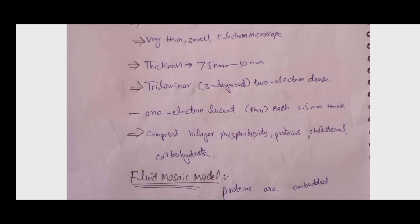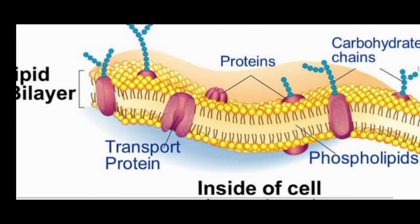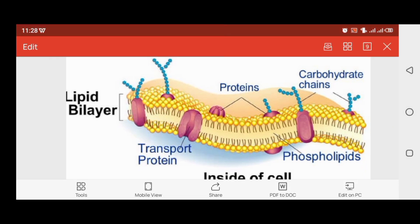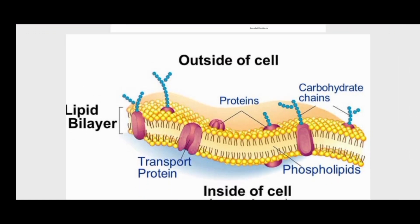The cell membrane is a bilayer composed of phospholipids, proteins, cholesterol, and glycolipids. What is the fluid mosaic model of the cell membrane? In this model, proteins are embedded in the lipid bilayer. It is fluid in nature because the proteins are embedded in the fluid layer of phospholipids, forming a mosaic-like pattern. You can see the lipid bilayer, the outer surface, membrane proteins, carbohydrate chains, phospholipids, and transmembrane proteins.